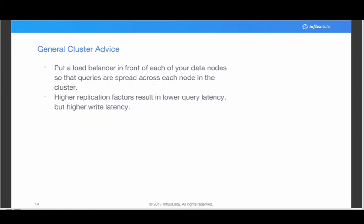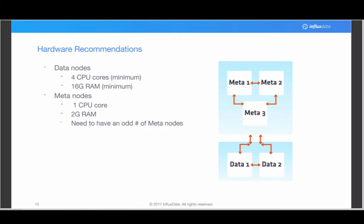Some general cluster advice: you want to put a load balancer in front of your data nodes so that queries and writes are spread across each node in the cluster. For hardware, if you're going to be operating an enterprise cluster, your data nodes really need a minimum of four CPU cores — preferably eight.